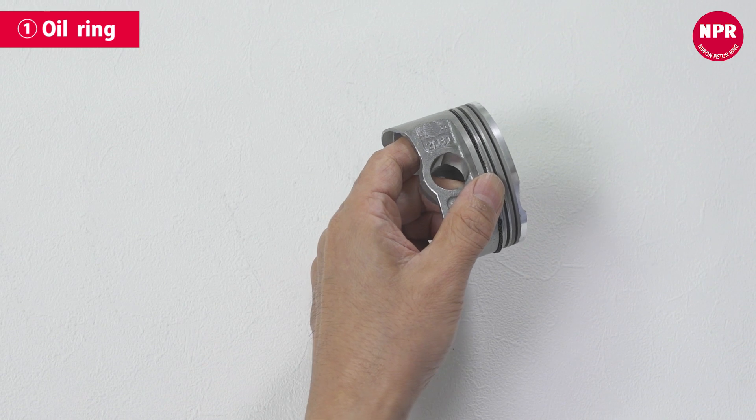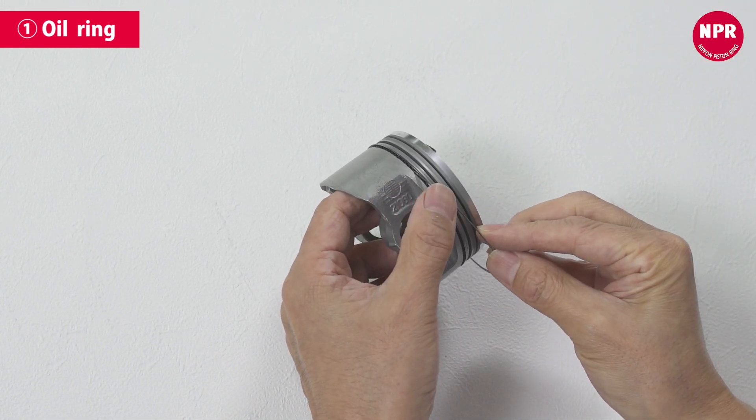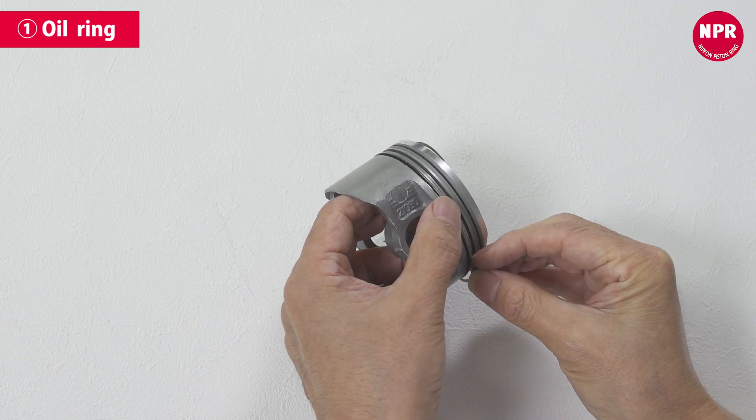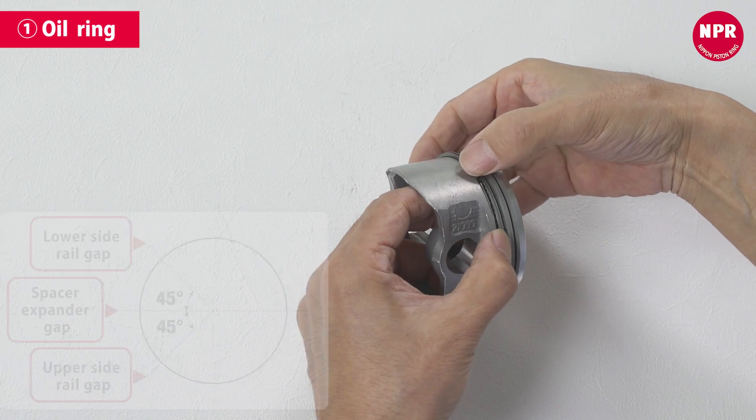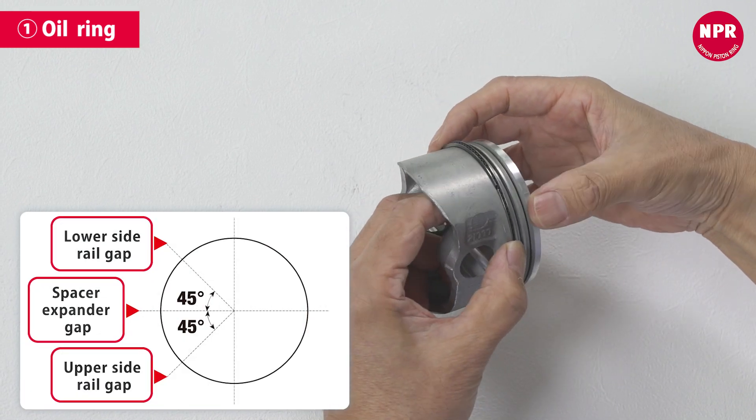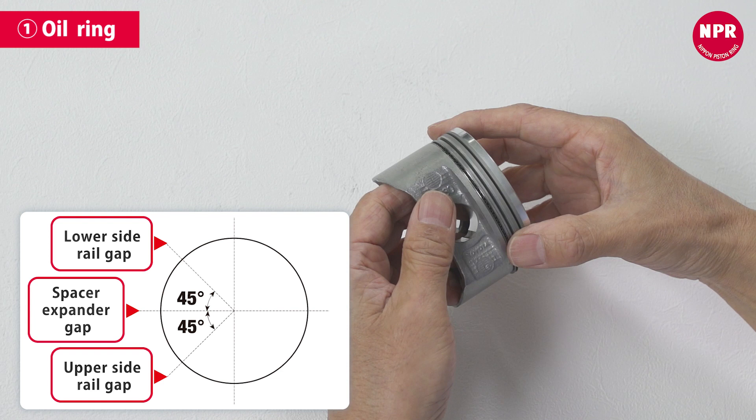Next, attach the lower side rail. Attach it between the space expander and the lower face of the piston ring groove. Line up the lower side rail end gap so that it is offset by 45 degrees from the spacer expander gap in the opposite direction from the upper side rail's end gap.